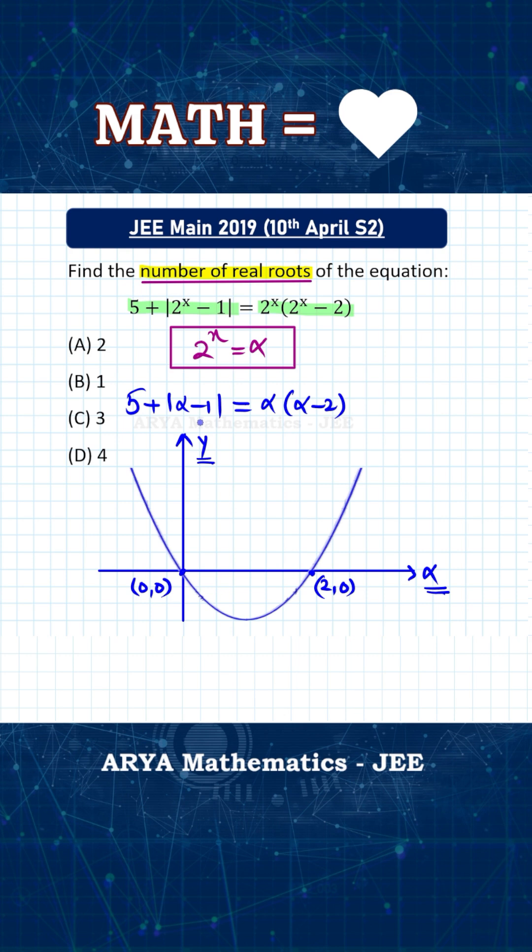And if we plot the graph of function on left hand side, so we have 5 plus mod alpha minus 1. So obviously, we will get minimum value when alpha is 1. And when alpha is 1, the value of y will be 5. So this will be the vertex of that V shaped curve. And from here, you can draw one line in this direction and another line in opposite direction. So this is the graph of function on left hand side.